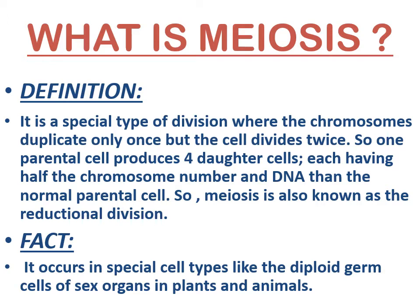Meiosis is reported in diploid germ cells of sex organs. This includes primary spermatocytes of testes to form male gametes called spermatozoa, and primary oocytes of ovaries to form female gametes called ova in animals, and in pollen mother cells, microsporocytes of the anther, and megasporocytes of the ovule of the ovary of the flower in plants to form haploid spores.